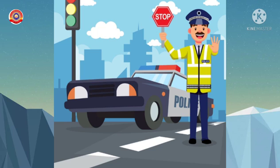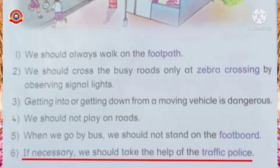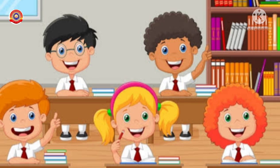Can you name the person seen in this picture? Yes, he is a traffic police officer. This traffic police controls the traffic on busy roads. So the last road safety rule is: if necessary, we should take the help of the traffic police. Have you understood about road safety rules? Okay, are you ready to read the textbook?